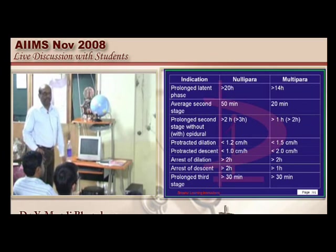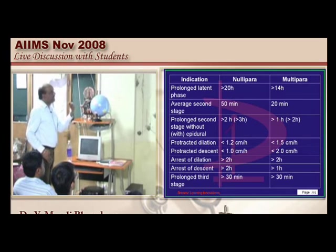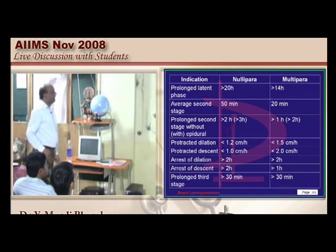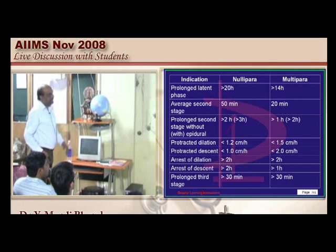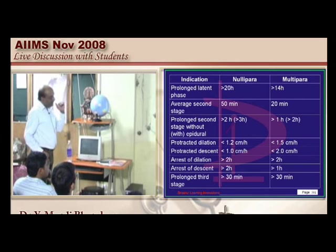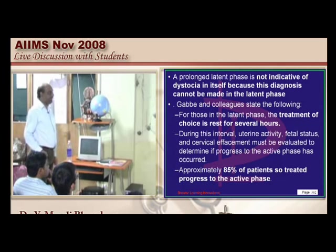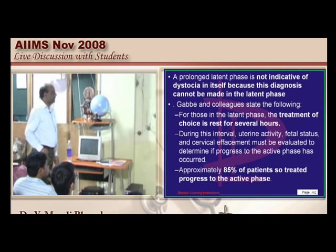Prolonged latent phase: greater than 20 hours in nullipara, greater than 14 hours in multipara. Prolonged second stage: greater than 2 hours in nullipara, greater than 1 hour in multipara. Protracted dilatation: less than 1.2 cm/hour in nullipara, less than 1.5 cm/hour in multipara.